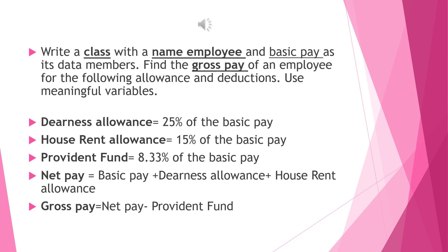From the basic pay we have to calculate, and it says to use meaningful variable names. The calculations for allowances and deductions include: DA is 25% of basic pay, HRA, provident fund, net pay, and gross pay, all calculated based on given formulas.